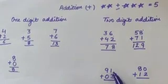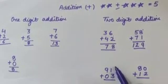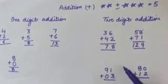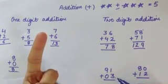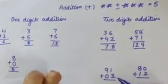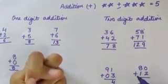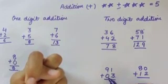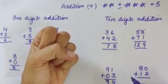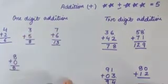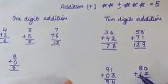Next is 91 plus 03. That means we have to add 3 to 91. Starting from the right side, the first number is 1. We open 1 finger and count on after 3 — after 3 comes 4. So 1 plus 3 is 4. Then for the tens column, 9 plus 0: since 0 is nothing, 9 plus 0 is 9. So 91 plus 03 is 94.